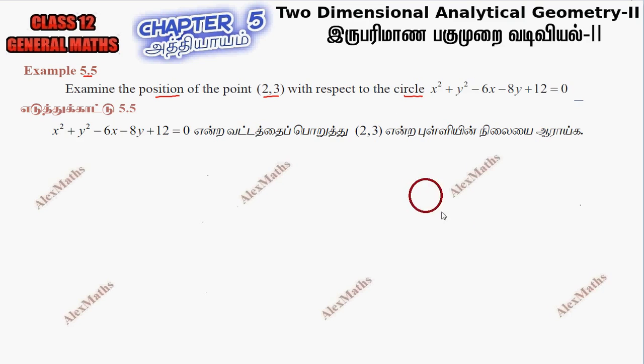Suppose we have a circle. In the circle equation, the general equation of the circle is x square plus y square plus 2gx plus 2fy plus c equal to 0.